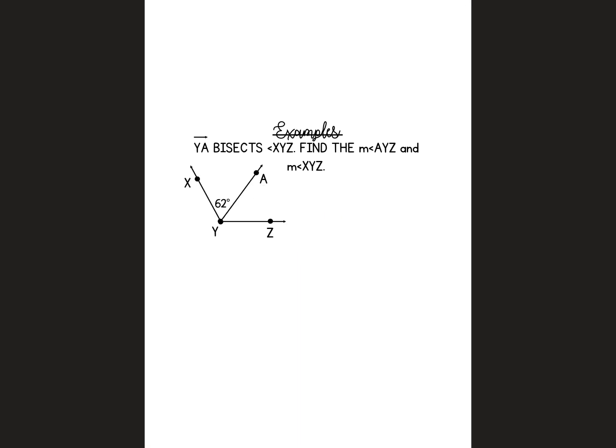This second one says YA bisects XYZ. If you look, here's YA. It's cutting this angle XYZ into two equal parts. So we know that this piece here that's labeled 62 is the exact same as this piece over here. And then that means that altogether, this angle would be 62 plus 62, which is 124.